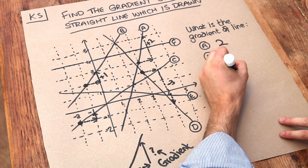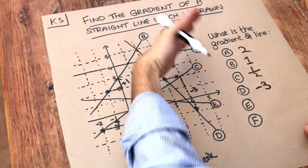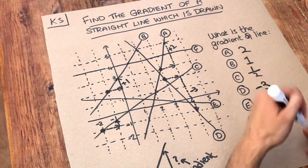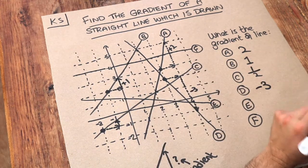So that means the gradient is minus three. Always check: if the line is going uphill it should be a positive number, if the line is going downhill it should be a negative number.